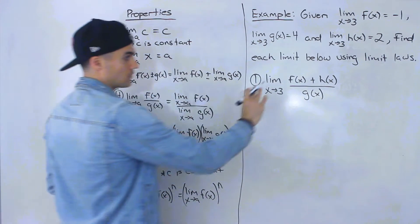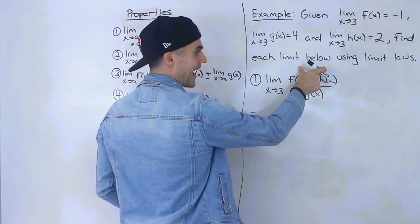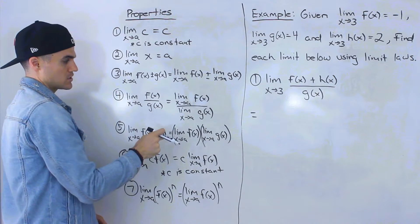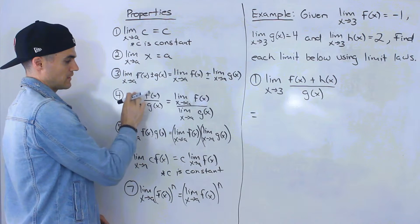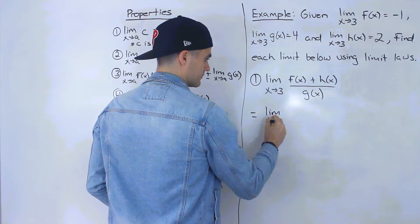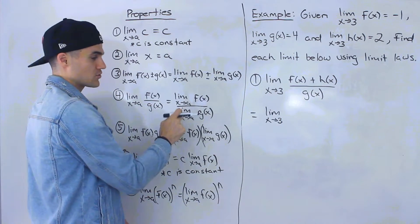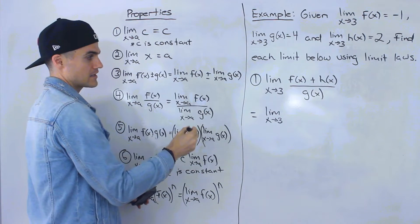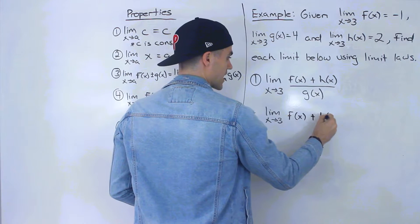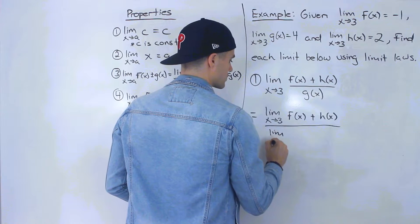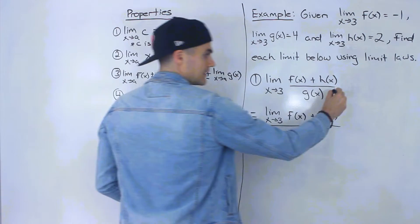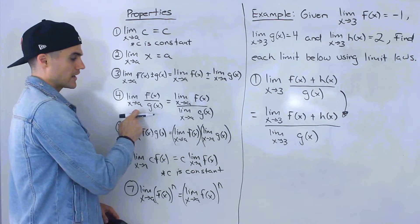Notice that this is a rational function where we are adding two functions in the numerator and then have a single function in the denominator. The first law we're going to use is the quotient law — the limit as x approaches a of f of x over g of x — where we can distribute that limit to the numerator and the denominator. So we get the limit as x approaches 3 of f of x plus h of x, all over the limit as x approaches 3 of g of x.